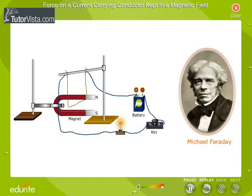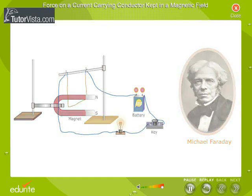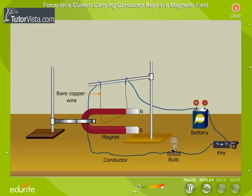Let us perform an activity to understand this concept. Suspend a bare copper wire with the help of an insulated copper wire between the poles of a u-shaped magnet as shown here. Observe the initial position of the copper wire, a good conductor of electricity.